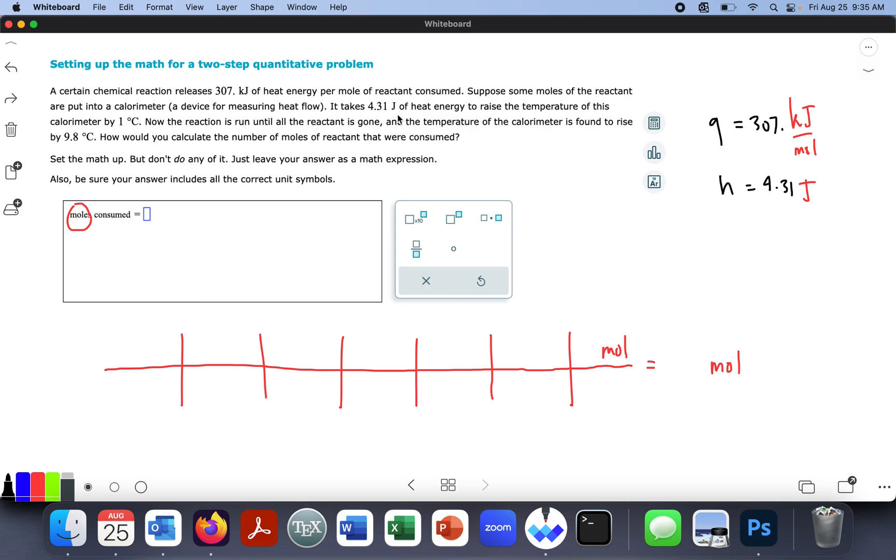It takes 4.31 joules of heat energy to raise the temperature of this calorimeter by 1 degree Celsius. Ah, wait a second. That's joules per degree Celsius. Okay, so that's not a heat anymore, but anyway. You see 4.31 joules per 1 degree centigrade? That's the trick right there, I bet.